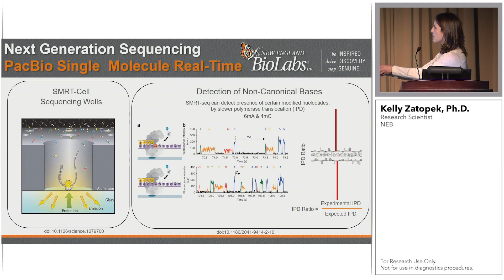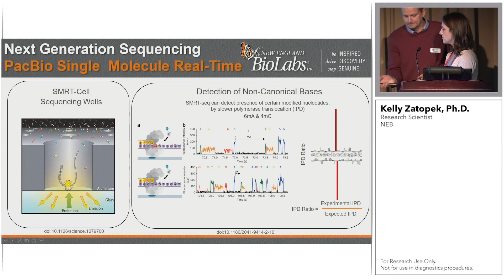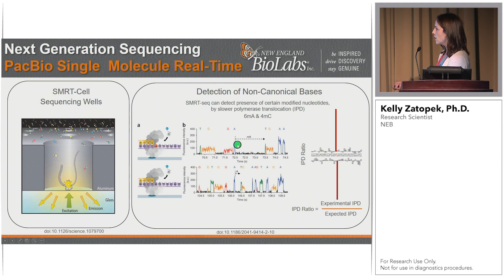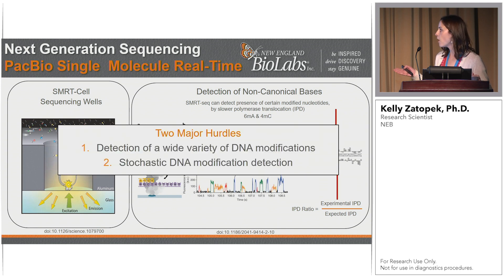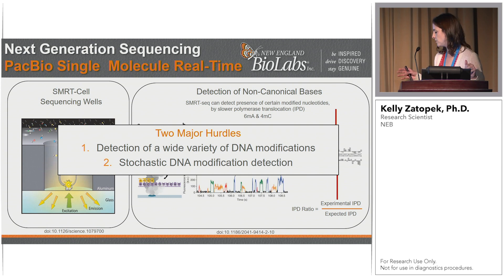Here we have T being incorporated across 6-methyl-A, and we see a delay in the polymerase translocation — the interpulse duration — whereas canonical T across canonical A has a shorter interpulse duration. There are two major hurdles we must overcome to use PacBio SMRT sequencing to detect a wide variety of DNA modifications. First, we want to detect a wide variety of modifications, and currently PacBio can only reliably detect 6-methyl-A and 4-methyl-C. Second, we want to be able to detect stochastic DNA modifications — random DNA modifications across the genome.